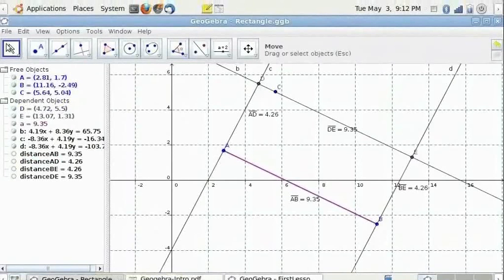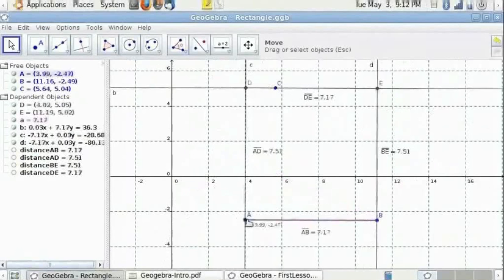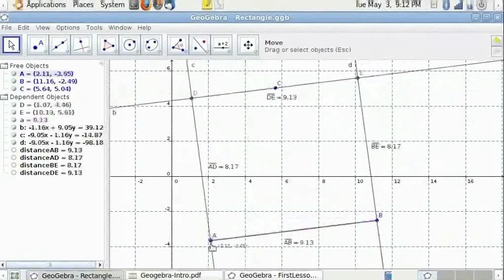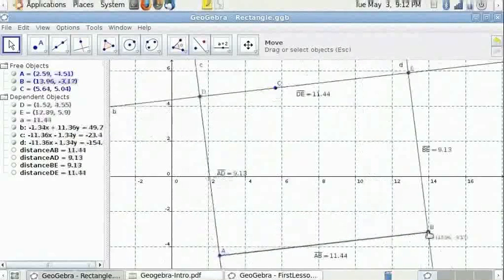Now, if I click on the Move tool item and move the free objects, notice that any position, my rectangle ABED remains a rectangle if constructed properly.